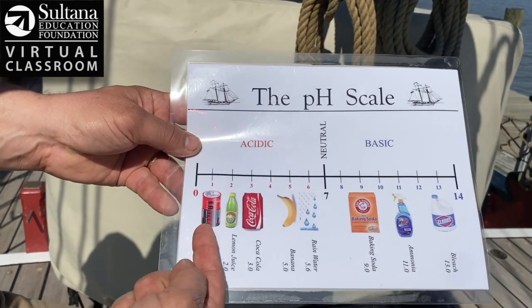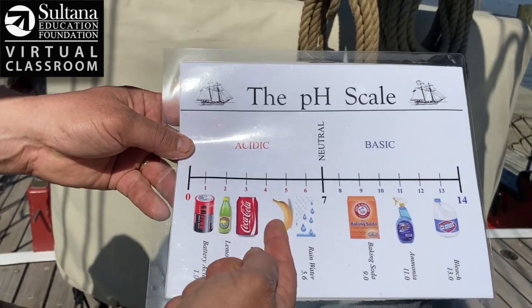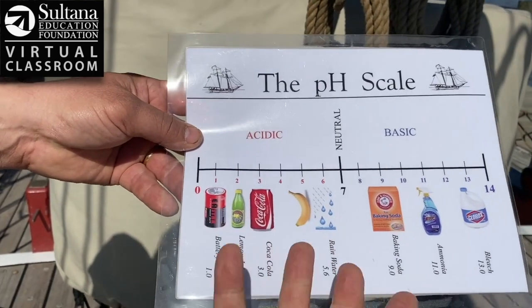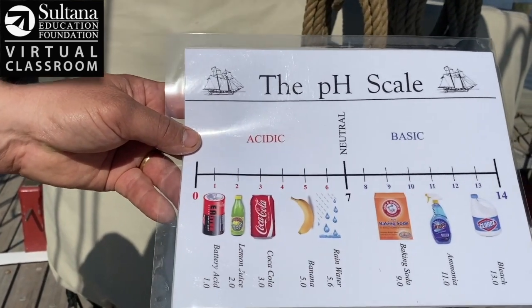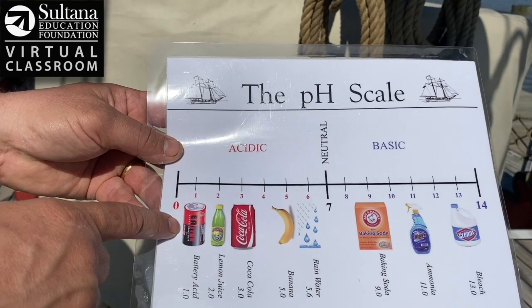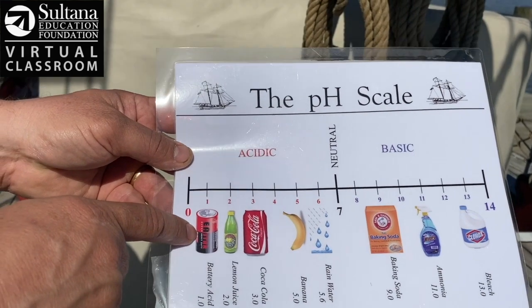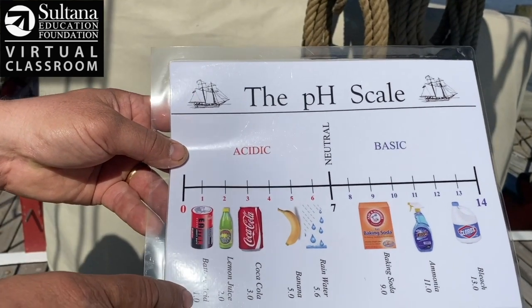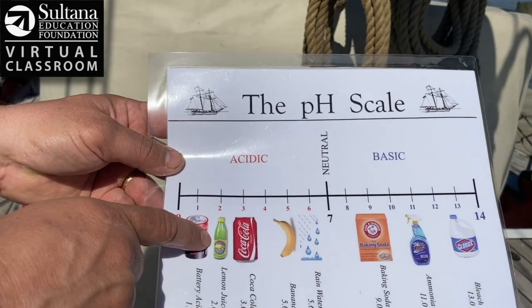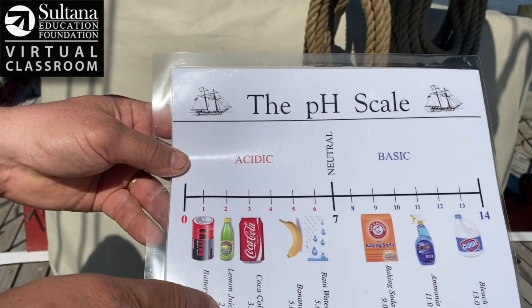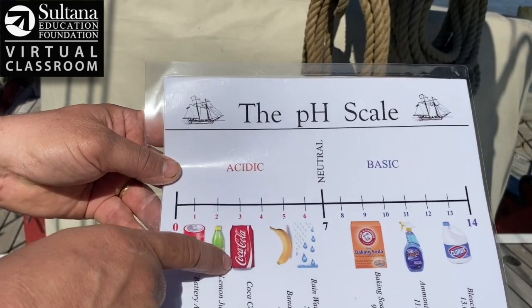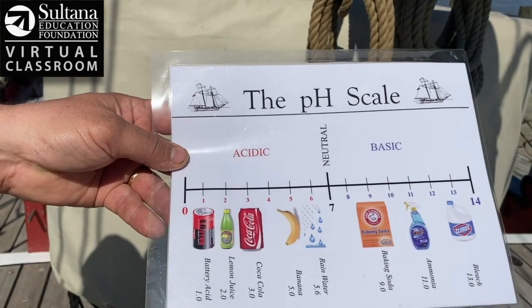Here are some acidic objects that you might see in your everyday life. Way down here, battery acid has a pH of 1.0, lemon juice 2.0, and Coca-Cola 3.0.